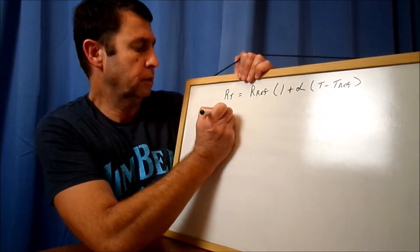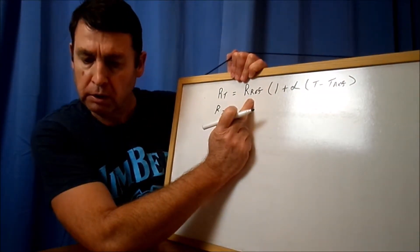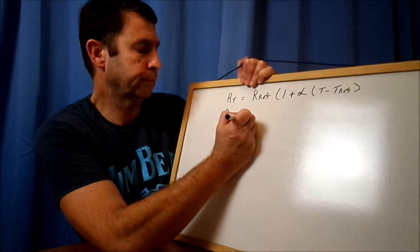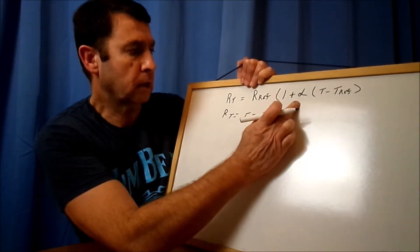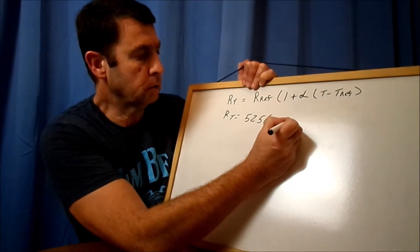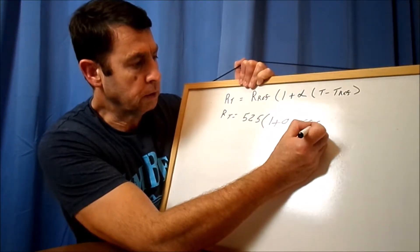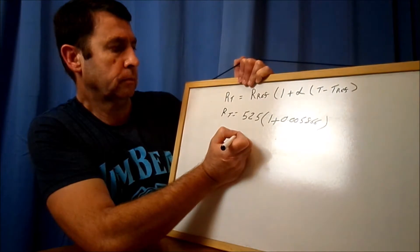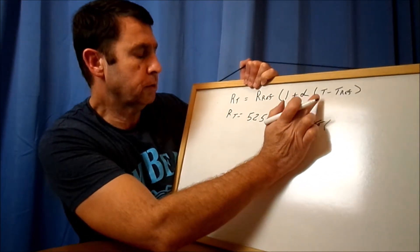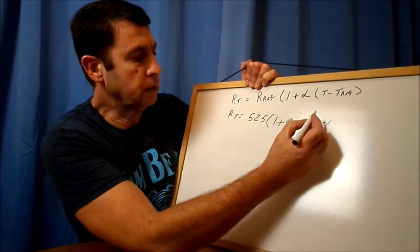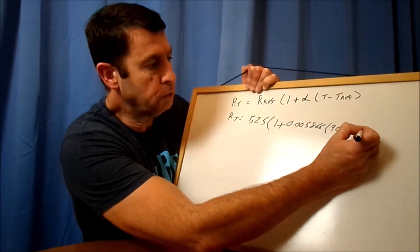Pause the film and have a go at that calculation, and I'll run through it. Let's start popping these figures in there. We said our resistance total is going to equal our resistance reference, so that's going to be 525 ohms, times 1 plus alpha - and that we said for nickel is going to be 0.005866.